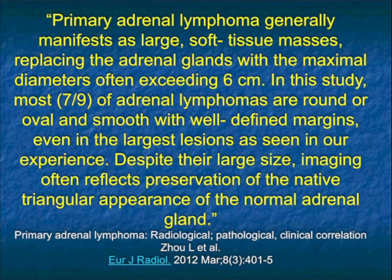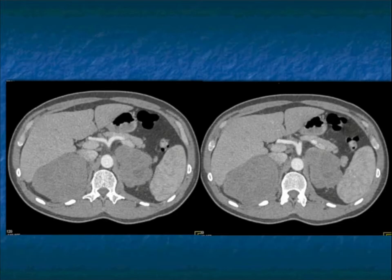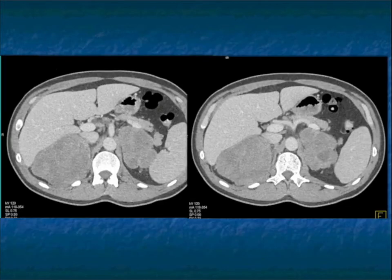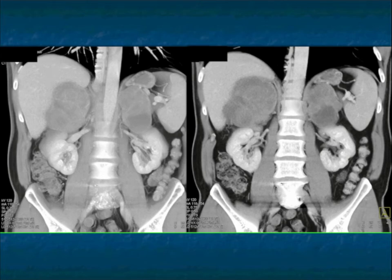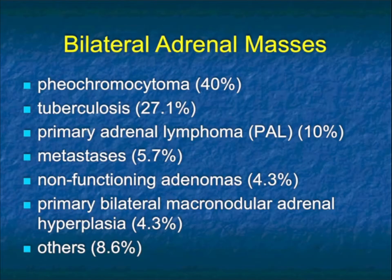Some things to remember: despite their large size, imaging often reflects preservation of the native triangular appearance of the normal adrenal gland. Where primary ACCs tend to be round or oval, lymphomas tend to be more triangular — that can help you every once in a while. Most of you have never seen primary adrenal lymphoma, so I wanted to show it. It's in the differential of bilateral adrenal masses, and notably primary adrenal cortical carcinoma is listed only under the 'other' category in some differentials.